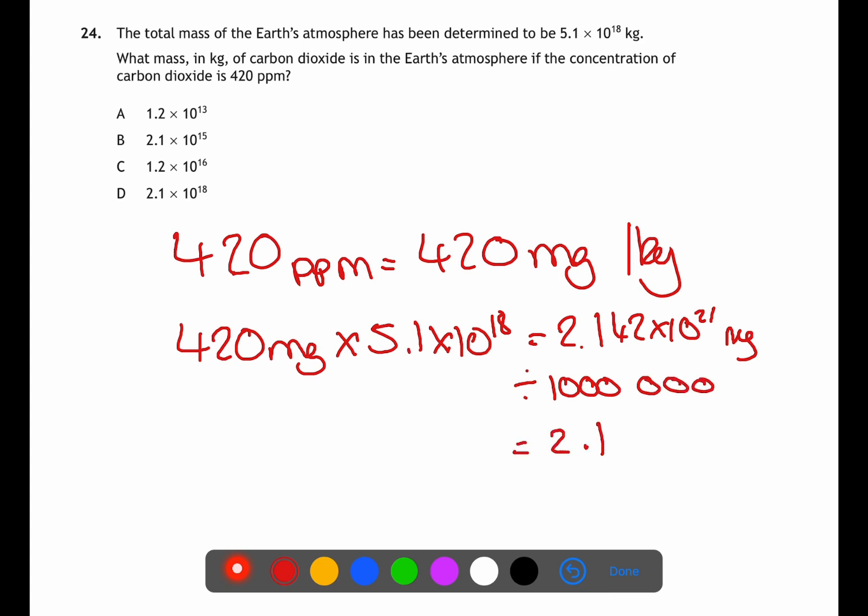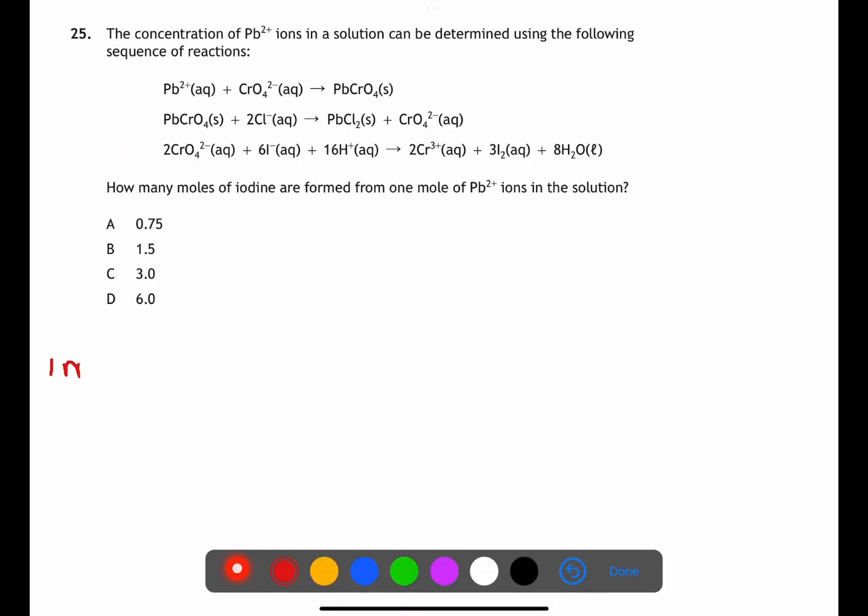Question 25 is looking at a series of reactions. We're trying to find how many moles of iodine are formed from one mole of lead ions. If we start from the lead ions in the first equation we can see that one mole of lead ions produces one mole of lead chromate. We can then follow this into the second equation where one mole of lead chromate is producing one mole of chromate ions. We now have two moles of chromate ions which is producing three moles of iodine. Therefore if there was only one mole of chromate ions, only 1.5 moles of iodine would be produced.